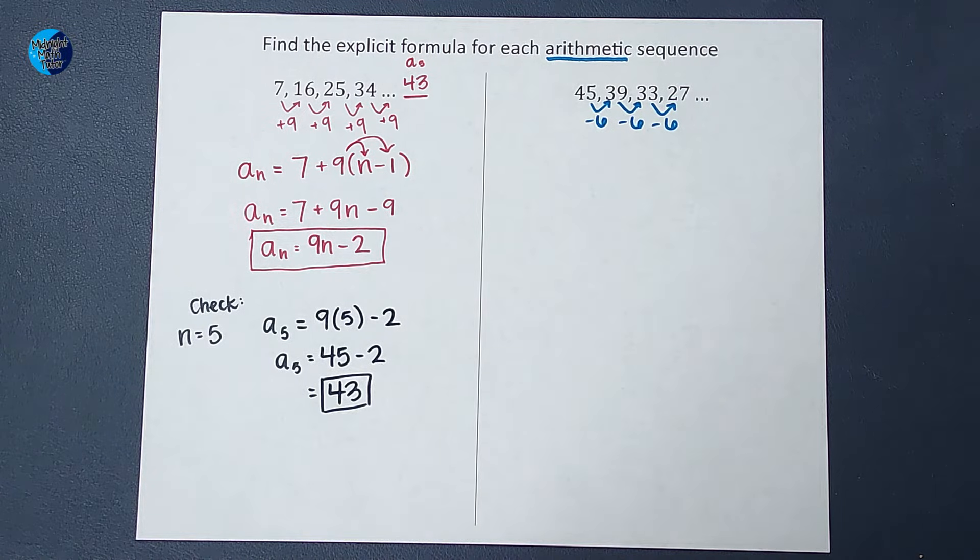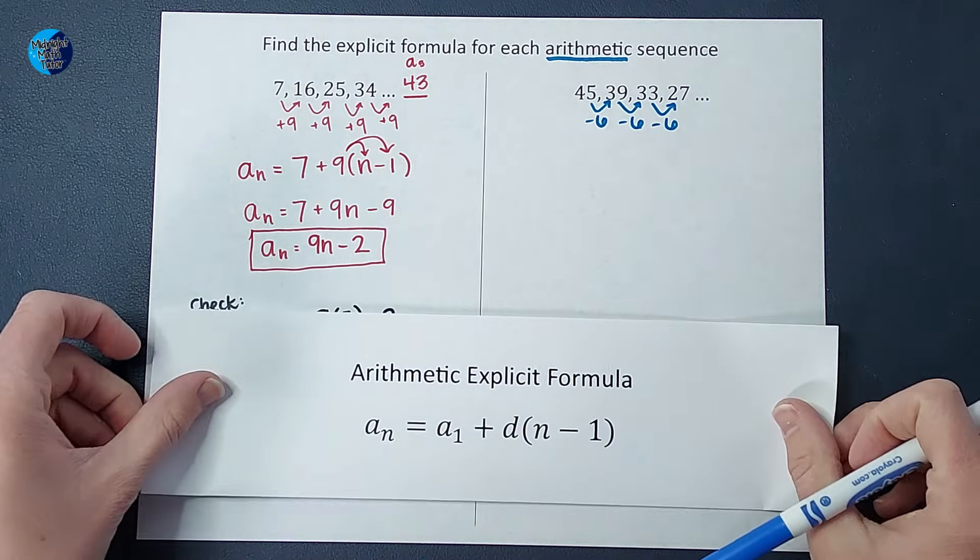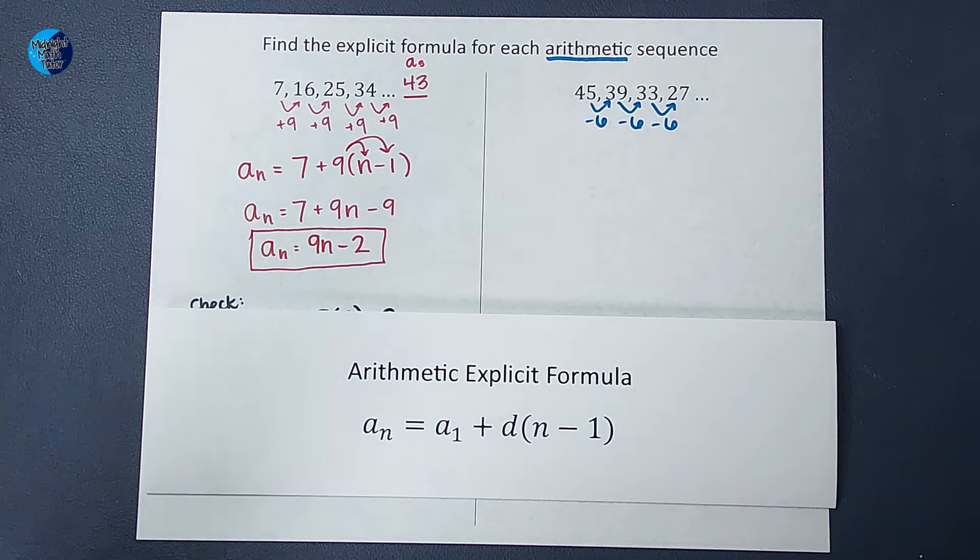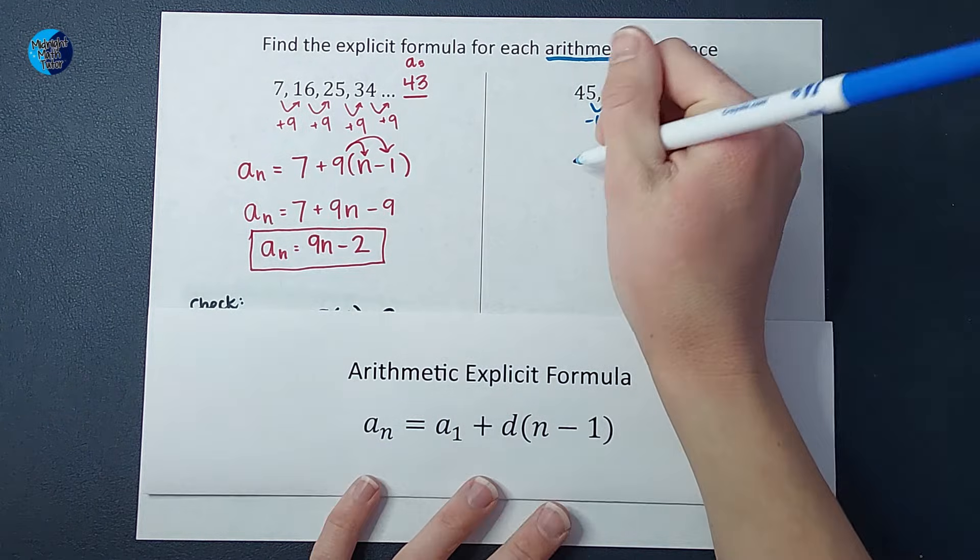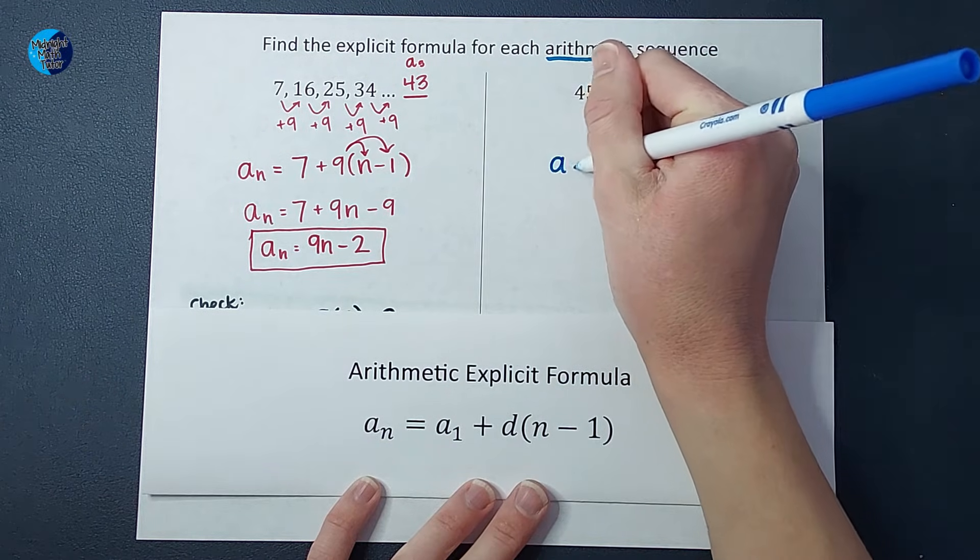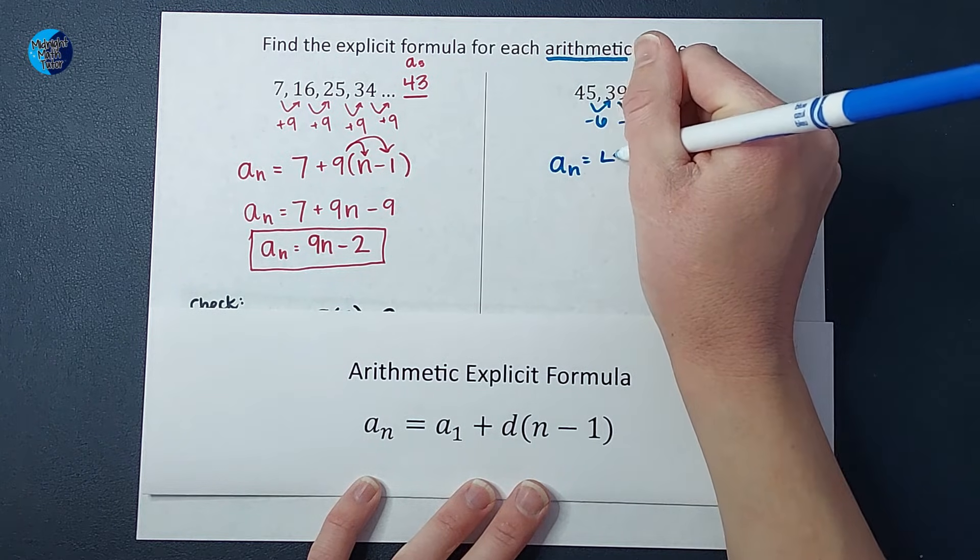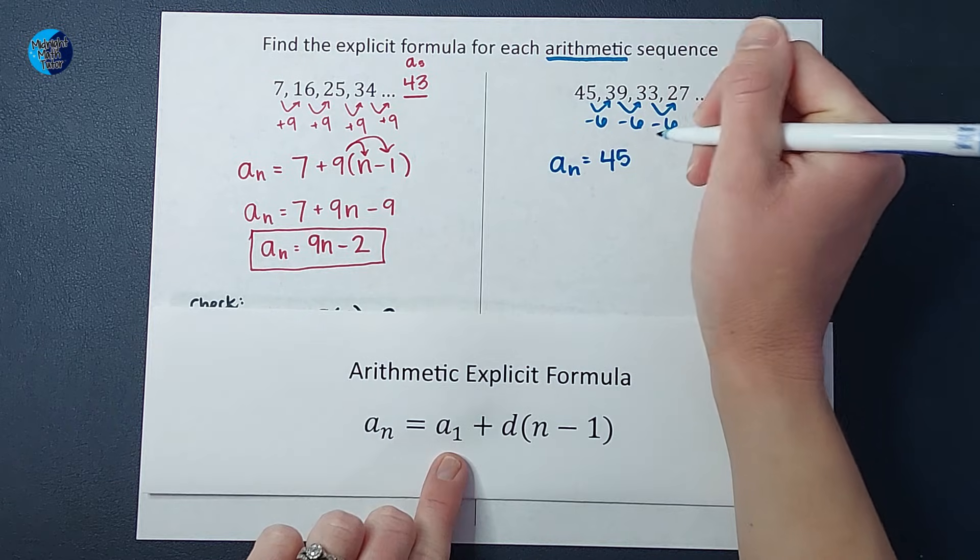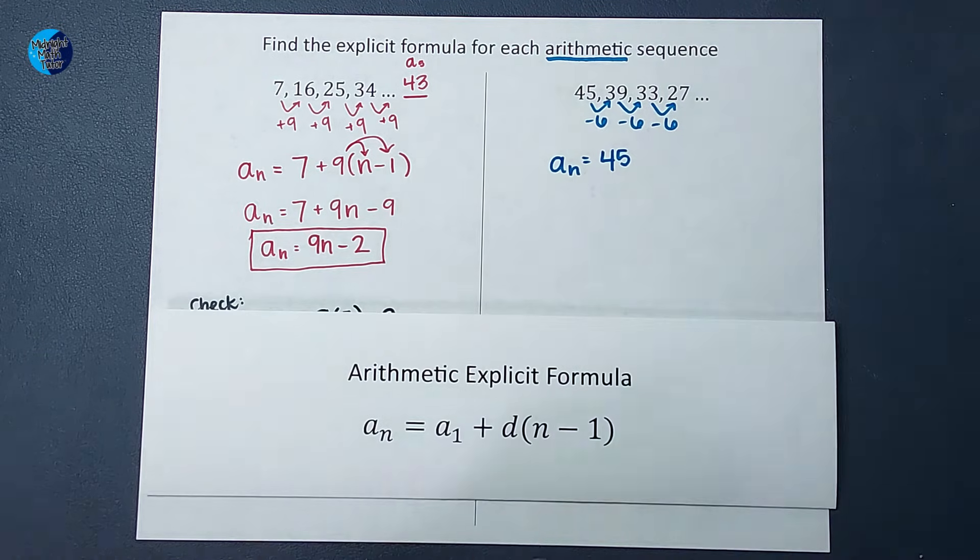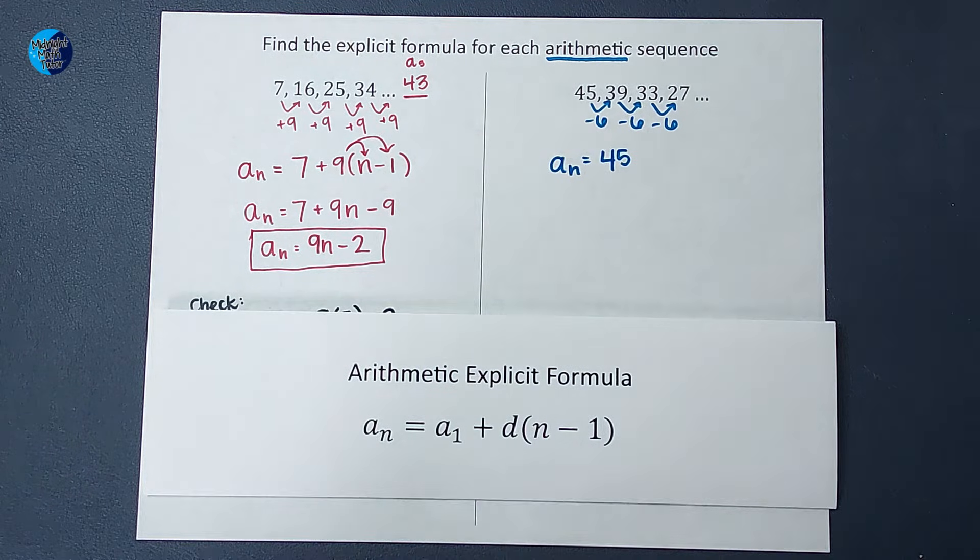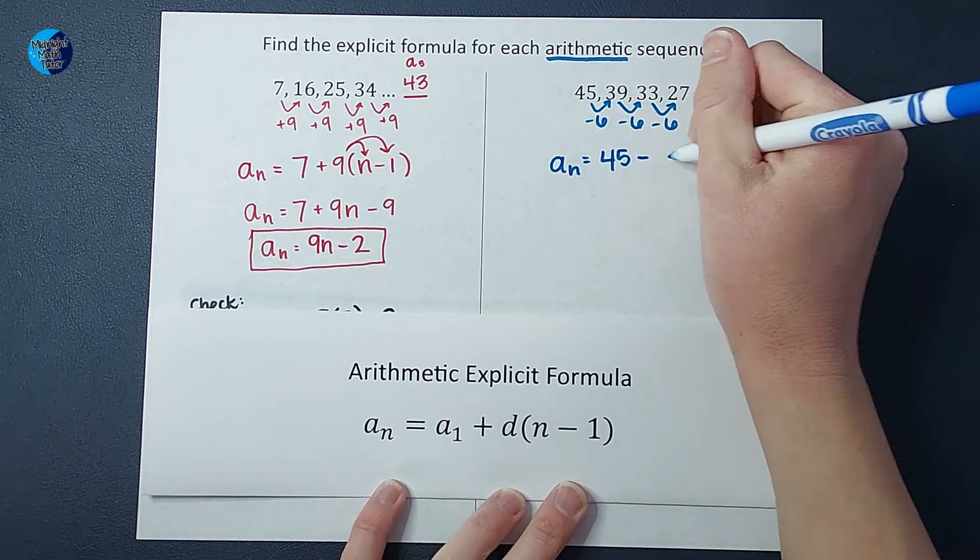All right. So we have our formula, but remember, we aren't just memorizing this because we know how it works. So for whatever number we want to find, we take the first number in our sequence, a sub one, and we add our common difference, or in this case, we're subtracting, minus six.